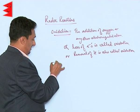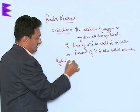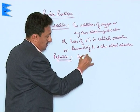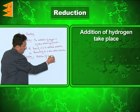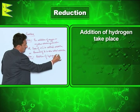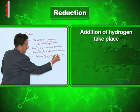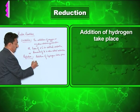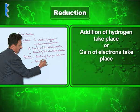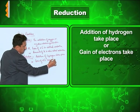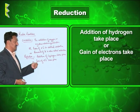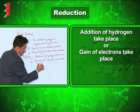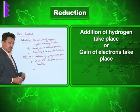Similarly, reduction refers to processes or reactions in which addition of hydrogen takes place — those are called reduction processes. In terms of electrons, it is the processes in which gain of electrons takes place. The processes or reactions in which gain of electrons takes place are called reduction.